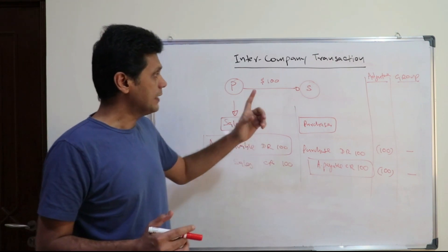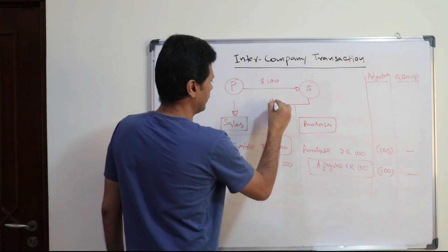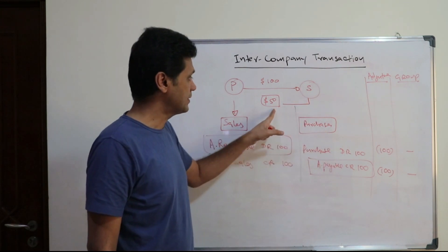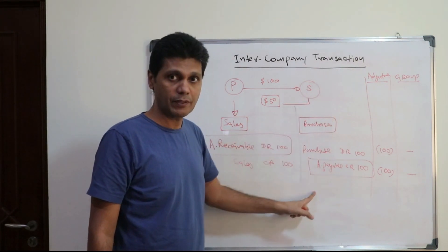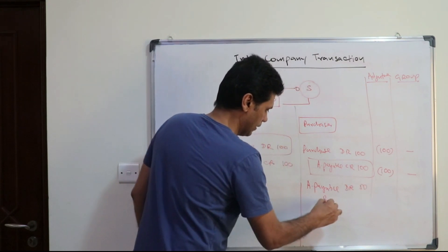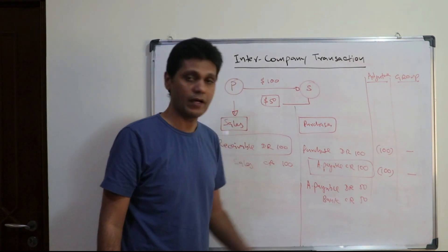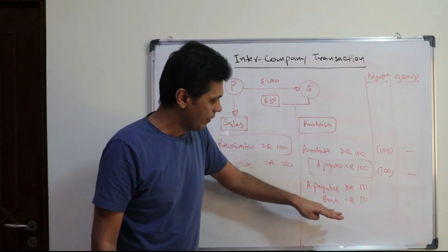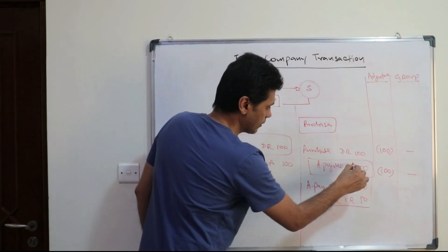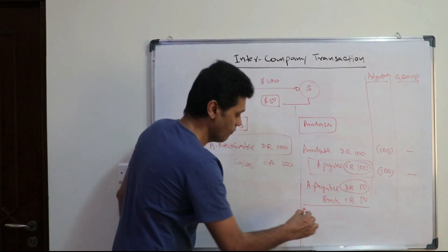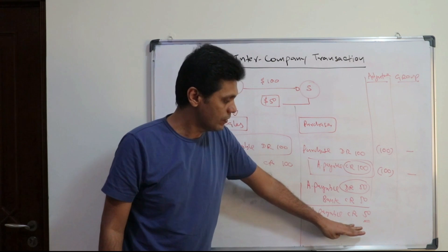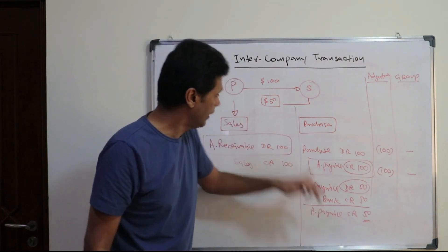Now let's continue the same example. Let's assume S company has settled $50. They had an outstanding balance of $100, of which S company has settled $50. As far as S company is concerned, they will record this as: debit accounts payable by $50 and credit the bank account by $50. Once settled, they record this transaction. At the end of the financial period, accounts payable credit $100, accounts payable debit $50, so the net accounts payable will be credit $50. So at the end of the financial period, they have a balance of $50 due to be paid to the parent company.